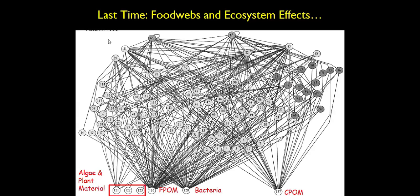Last time we were talking about food webs and ecosystem effects. We made the point that even in a fairly small stream, which Broadstone stream was, you can get into a really complicated set of relationships among species. This diagram doesn't say anything about the amount of energy moving in each of these pathways — it just says that species are connected.